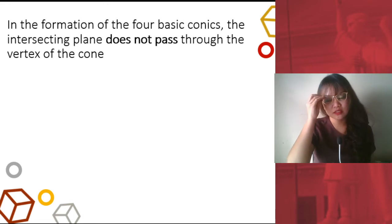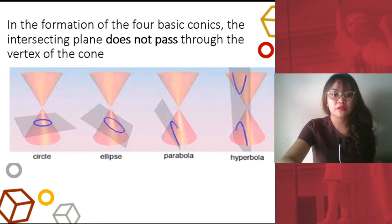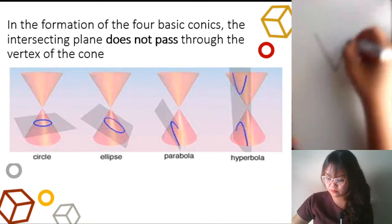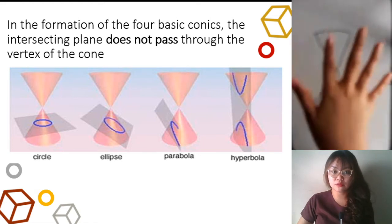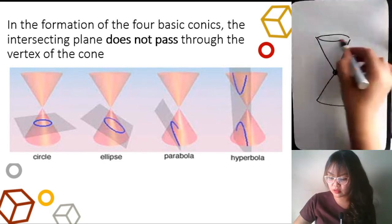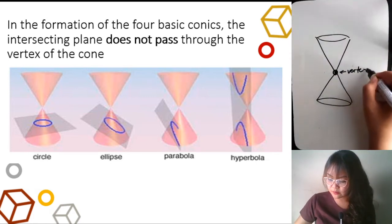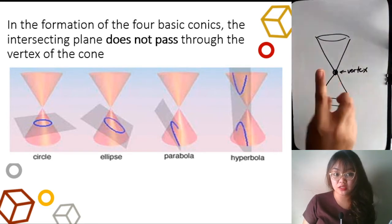So, in the formation of the four basic conics, the intersecting plane does not pass through the vertex of the cone. That's for the first group a while ago. If you would notice, it doesn't pass through the vertex. The vertex is where your two naps meet. So, let's say you have these cones. You have these cones. So, this would be where the two cones intersect, and this is called the vertex. So, looking at the four basic conic sections, the intersecting plane does not pass through the vertex of the cone. It doesn't pass through here.